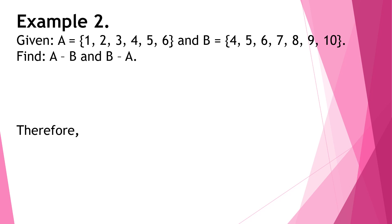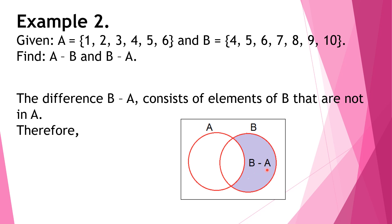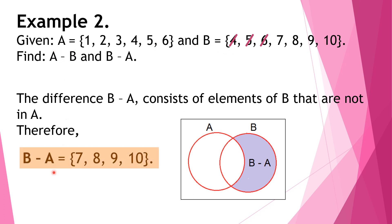Next, find B minus A. B minus A is the opposite of A minus B — it consists of elements of B that are not in A. We take away the elements of B that are also in A: those are 4, 5, and 6, since they are elements of both B and A. The four numbers that remain in B are 7, 8, 9, and 10. Therefore, B minus A is equal to 7, 8, 9, and 10.